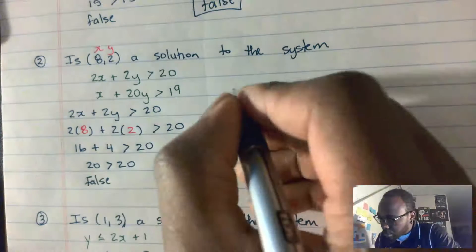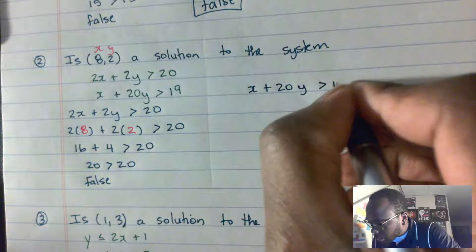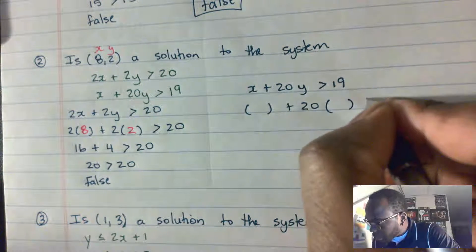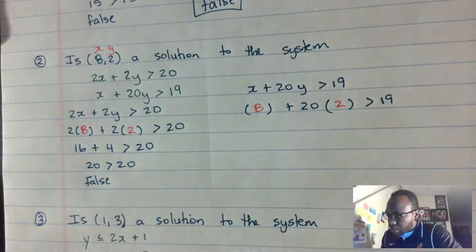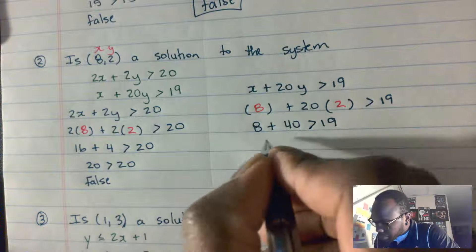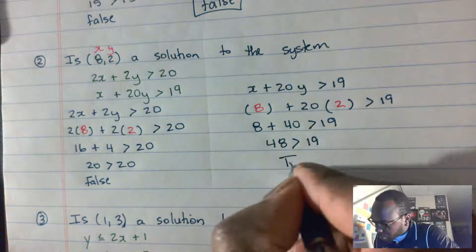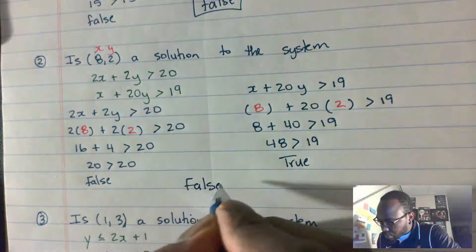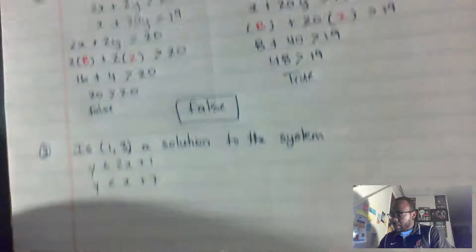We have 16 plus 4 is 20, greater than 20. But 20 is not greater than 20, so this is false. Now for the second inequality, x + 20y > 19: x is 8 and y is 2, so 8 plus 20 times 2 is 40, giving us 48 > 19 — that is true. But since one is false and one is true, the answer is false.